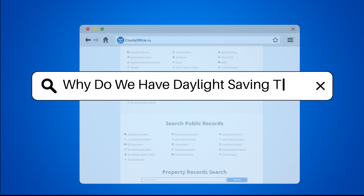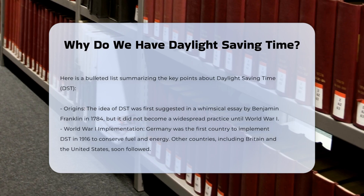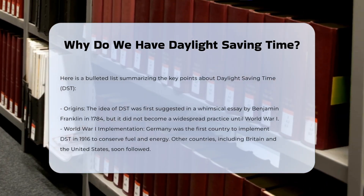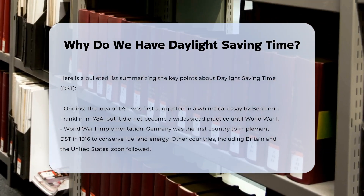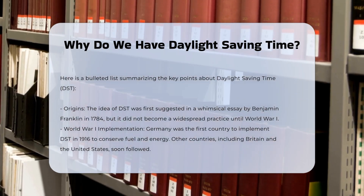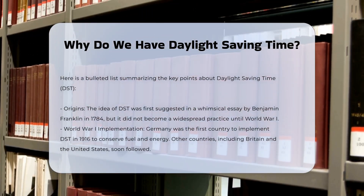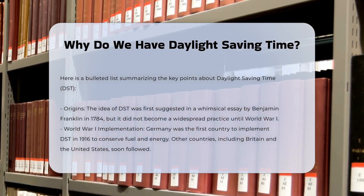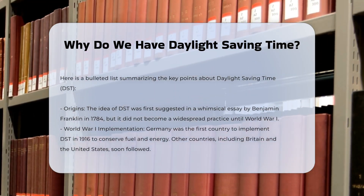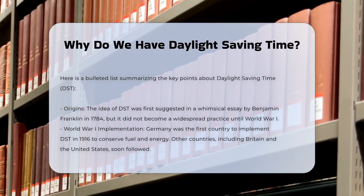Why do we have Daylight Saving Time? Daylight Saving Time, or DST, is a practice that involves advancing clocks to make better use of the longer daylight hours available during the summer months. This concept has been around for over a century and has its roots in several key historical and practical factors.